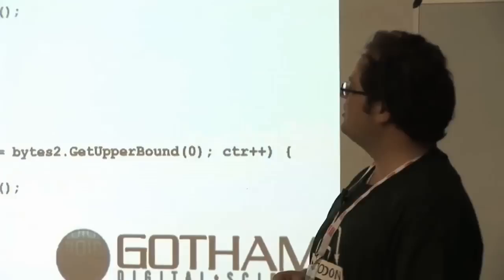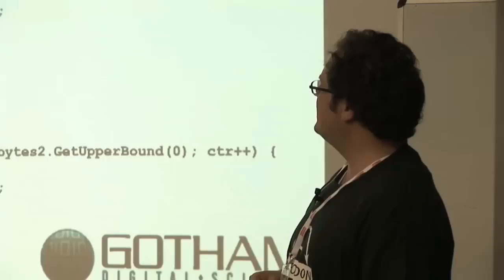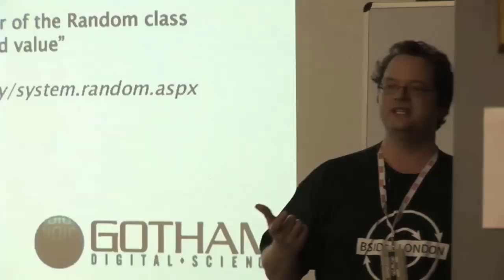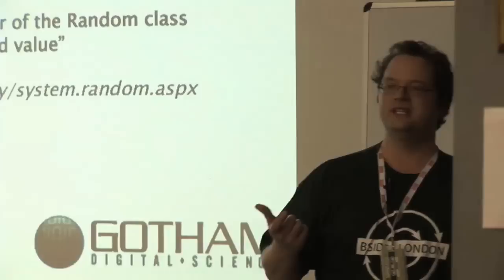In this .NET example we create a random number generator and output values — running it twice in quick succession produces the same output. Why? We didn't even supply a seed, and we were using a weak random number generator that seeds off the clock. So if you're seeding off the system clock, how predictable is it to figure out what the clock on your server is? It's not that hard. You could make an educated guess, especially if it's a Unix box running GMT — the timeframe is very limited.